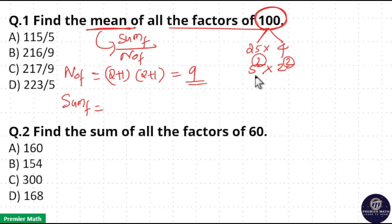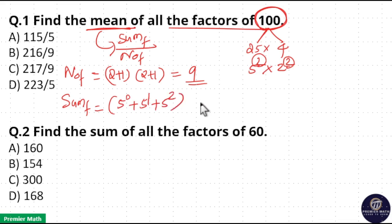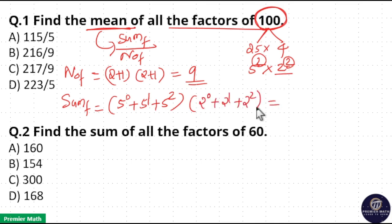Now take the sum of factors. For that, take the sum of factors of 25, that is the sum of factors of 5 up to 5 square, which can be written as 5 raise to 0 plus 5 raise to 1 plus 5 square. Again take the sum of factors of 4, which is equal to 2 raise to 0 plus 2 raise to 1 plus 2 square. This is equal to 25 plus 5 is 30, plus 1 is 31. 31 into 4 plus 2 plus 1 is 7.